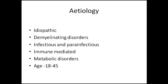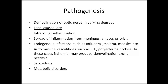Regarding etiopathogenesis of optic neuritis, it is usually idiopathic — no reasons can be found on systemic examination. Others could be demyelinating disorders like multiple sclerosis or Devic's disease. There could be infectious causes, then immune-mediated causes such as SLE and polyarthritis — in these immune-mediated diseases, vasculitis causes ischemia leading to demyelination or axonal necrosis. It could also be due to sarcoidosis and metabolic disorders like diabetes and anemia.